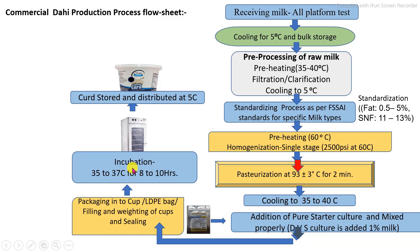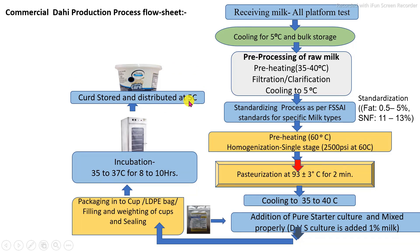After packaging, the product must be properly stored under the incubator. During incubation, do not disturb the cups or packets until the final product is prepared. The main factors required to control are: addition of pure culture, proper pasteurization, and completing packaging within half an hour after culture addition. After incubation, without any disruption, store at a specific temperature. Finally we get the curd, which must be immediately stored under refrigeration below 5 degrees Celsius for handling, storage, and transportation up to end use.